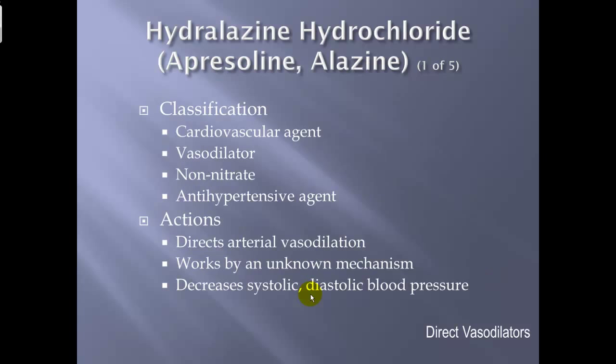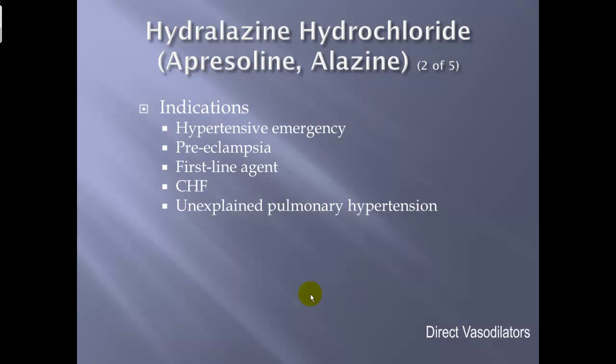Hydralazine hydrochloride, or Apresoline. Classification: cardiovascular agent, vasodilator, non-nitrate, antihypertensive agent. Actions: direct arterial vasodilation by an unknown mechanism; decreases systolic and diastolic blood pressures. Indications: hypertensive emergency and preeclampsia — it is a first-line agent for both. Contraindications: congestive heart failure and unexplained pulmonary hypertension.